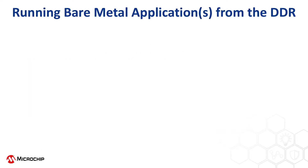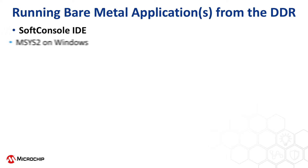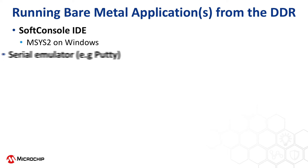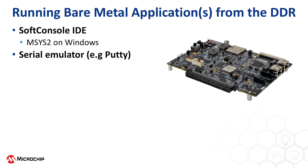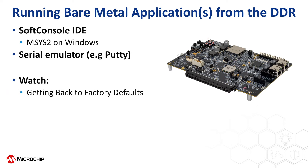To complete the steps shown in this playlist, you'll need the SoftConsole IDE along with MSYS2 on Windows to build the HSS, and a serial emulator such as PuTTY. The Icicle Kit can be used with a factory default design. To restore this design, watch the video called Getting Back to Factory Defaults.